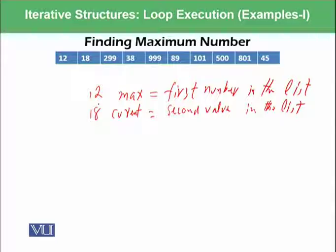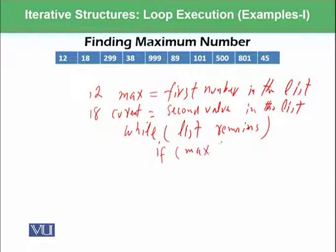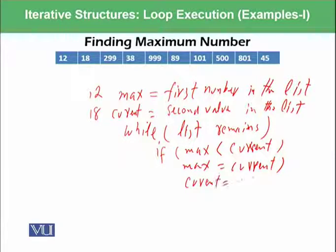Until when will we be doing this procedure? Until we have the list. So we can use a while loop: while list remains. Until when we have any element in the list, we will keep on working, keep on executing this loop. The condition could be if max is less than current, max is assigned current, and current is assigned to next value in the list.